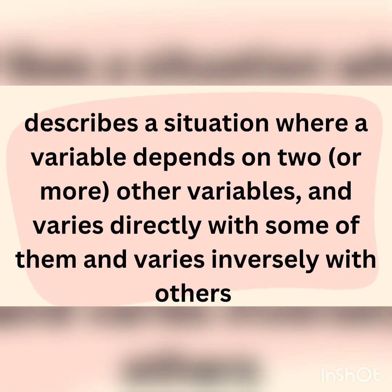Combined variation describes a situation where a variable depends on two or more other variables, and varies directly with some of them and varies inversely with others.